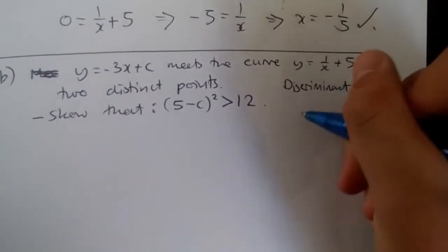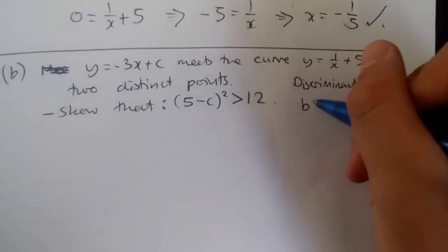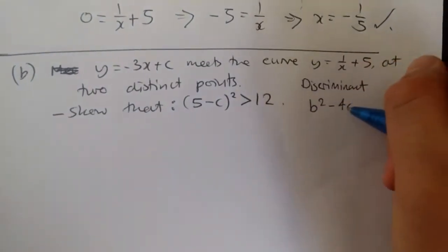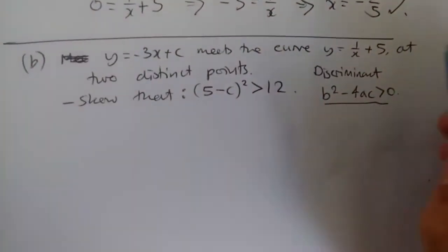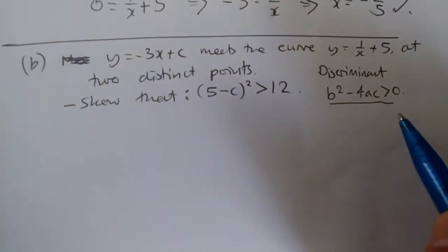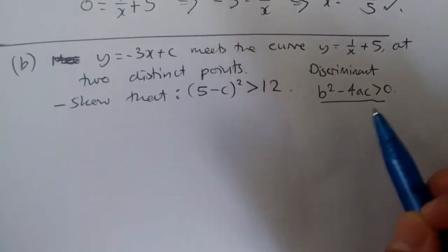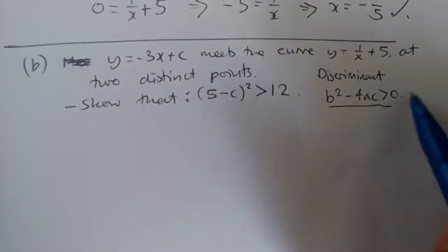Discriminant. And this implies that because there's two real roots, we're going to be using b squared minus 4ac and it has to be greater than 0. Because this implies that within the quadratic formula, there has to be positive roots. If it's negative, then there's no roots. If it's a single root, one point, then it'll be equal to 0.